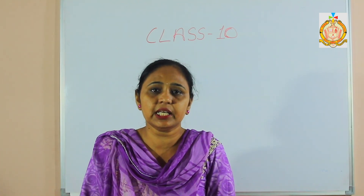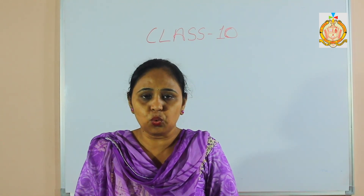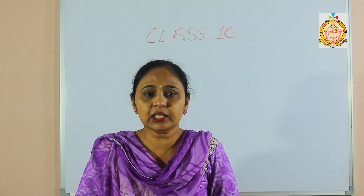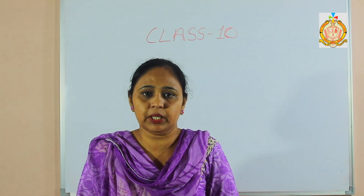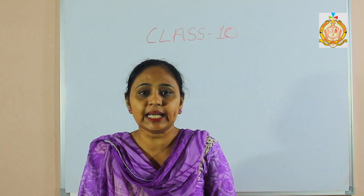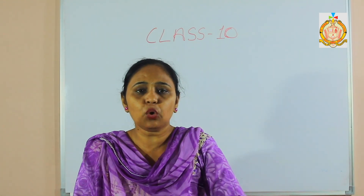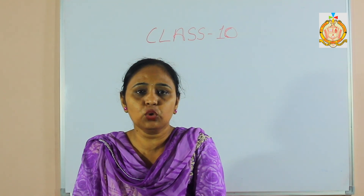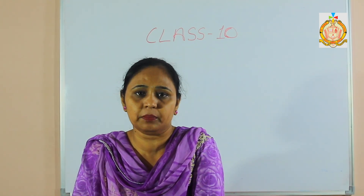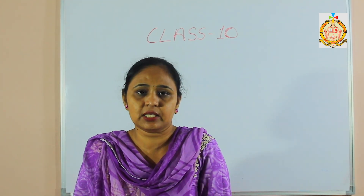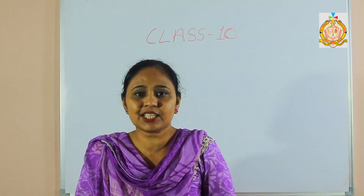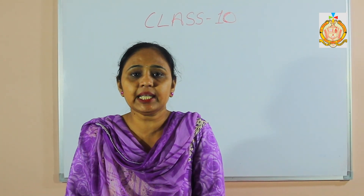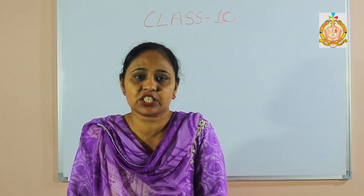In GST, there are two types: one is for the central government and the other one is for the state government. The tax we pay to the government of Punjab is the state tax, and the tax we pay to the Government of India is the central government tax, called CGST. The state tax is called SGST.